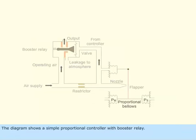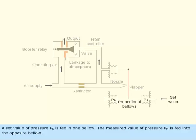The diagram shows a simple proportional controller with booster relay. A set value of pressure, Ps, is fed in one bellow.